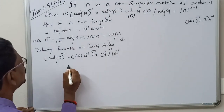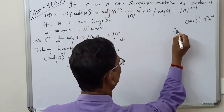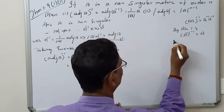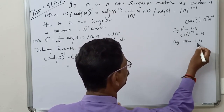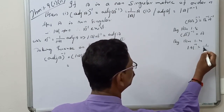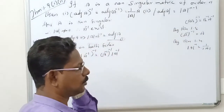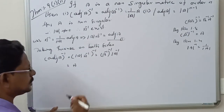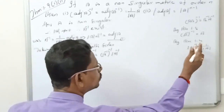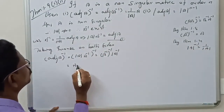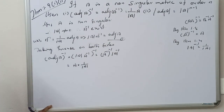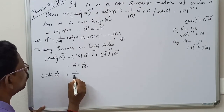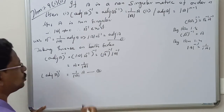By Theorem 1.8, A inverse the whole inverse equals A. By Theorem 1.4, determinant of A the whole inverse equals 1 by determinant of A. Therefore the expression equals 1 by determinant of A into A. This is equation number two.